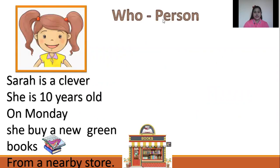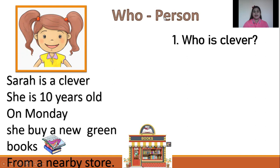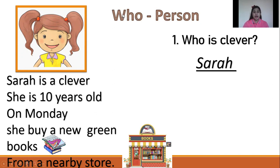Let us read together. WHO refers to a person. Sarah is clever. She is 10 years old. On Monday, she bought a new green book from a nearby store. Who is clever? Sarah. WHO refers to a person.